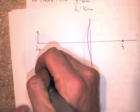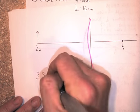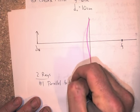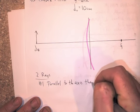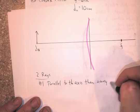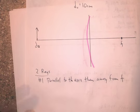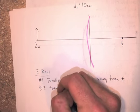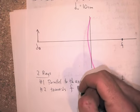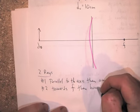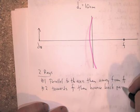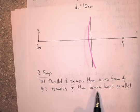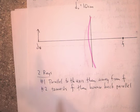So, number 1, there's going to be 2 rays again. Number 1 is going to go parallel to the axis. Then, away from F. Because it's a convex, it goes away. And then, ray number 2 is going to go towards F. Then, bounce back parallel. So, it's kind of similar. We're always saying something about the parallel, then something about F, and then something about F, and then something about parallel.